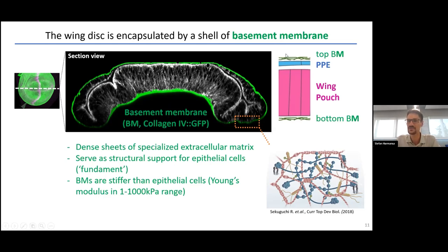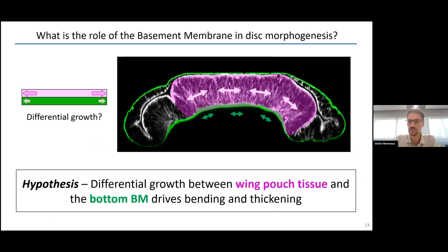Given that the disc is a four-layer structure, for the rest of the presentation I ask you to ignore the two top layers, as they are not relevant. We can explain the morphology of the disc exclusively with the bottom tissue layer and the bottom basement membrane. The hypothesis is that the wing pouch tissue outgrows the bottom basement membrane, which introduces bending and thickening of the tissue.